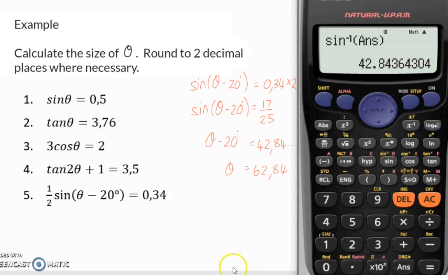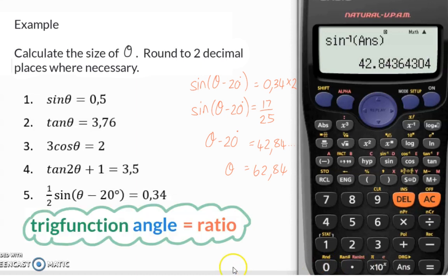So to solve trig equations, you firstly always need to ensure that the trig function and angle are alone on one side of your equation. Then you can use the shift on a Casio or on some calculators the second function option to determine the angle.